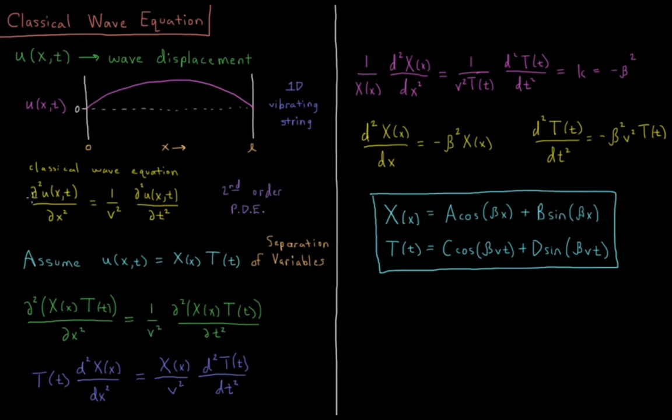So this is what we would call a second order partial differential equation. Second order because it involves second derivatives, and partial because it involves partial derivatives, and differential equation because it is an equation where we need to solve using the derivatives of a function for the function itself.